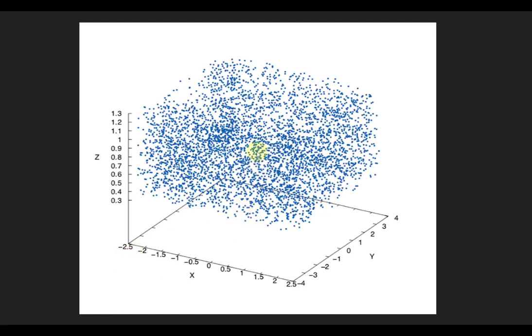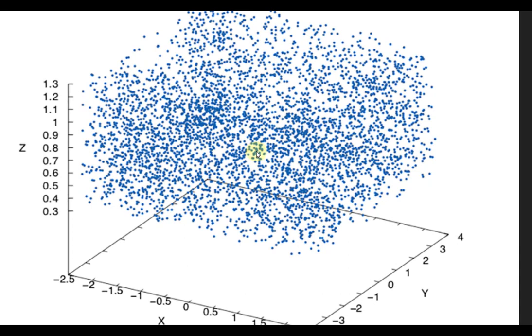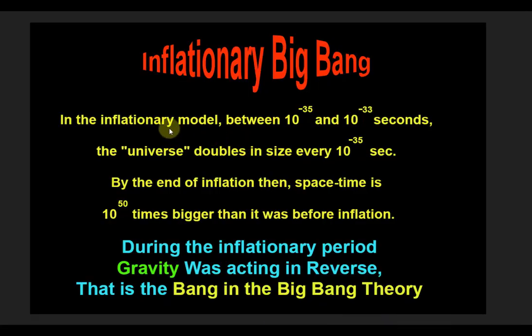The way space is going to expand is very interesting, because every point in space moves away from all other points in space. So if you take this point here, all points in space are going to move away from this point. There is no central point to this expansion — the center of the universe is everywhere. What this really means is that at every moment there is more and more space. This is the expansion of space.